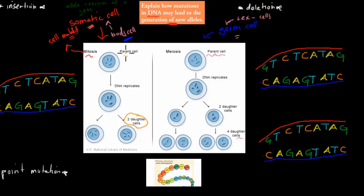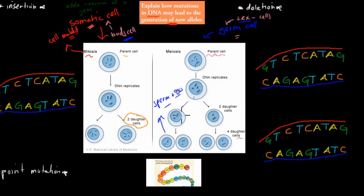Whereas if there's a mutation in germ cells — because these are sex cells — that mutation would be passed on to the sperms and eggs. Sperms and eggs create new offspring, so if we have a mutation in our germ cells, that means we create new alleles. New alleles are only produced when we have a mutation in our germ cells, not in our somatic cells, because the germ cells are the ones which pass on alleles. Somatic cells don't pass them on.